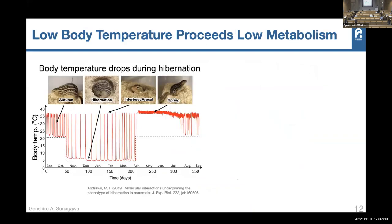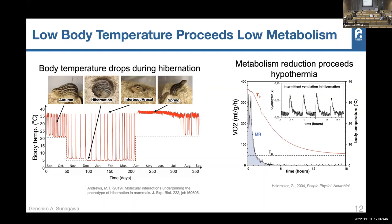What is common in every torpor-capable animal is that they lower their body temperature. The 13-lined ground squirrel is a typical hibernator with body temperature lower than 10 degrees during hibernation. Importantly, before they reduce body temperature, they always reduce their metabolism first. So hibernators are not cold because of lower temperature — rather, they have a lower body temperature because they actively suppress their metabolism.